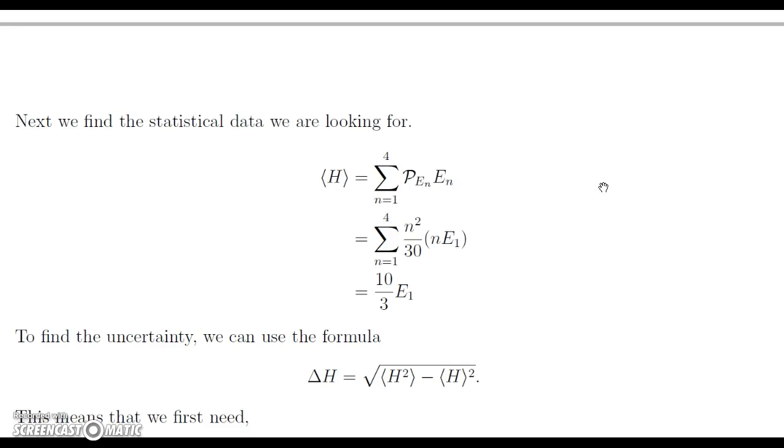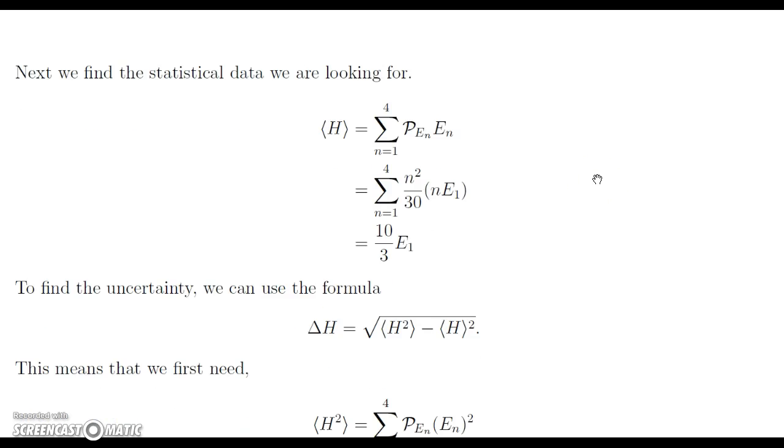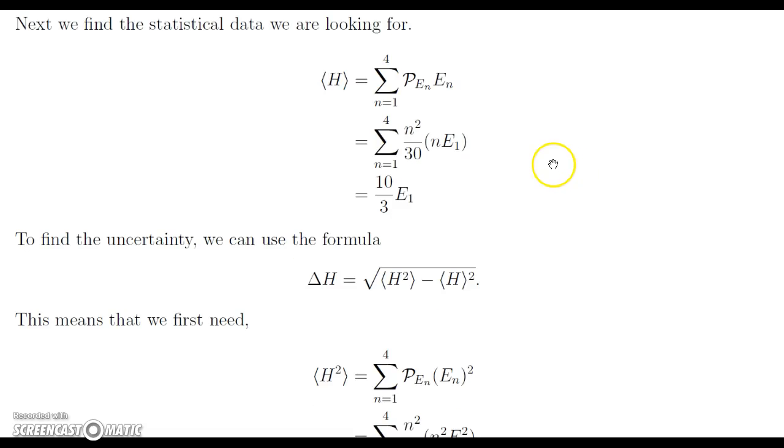Alright, so now we want to find the statistical data that we are looking for. So the first thing we need is the expectation value of the energy, which is the expectation value of the Hamiltonian operator. Because the way to get the time evolution of a system is by using the Hamiltonian. So here we get that the expectation value is just the sum of the probabilities times the energies themselves.